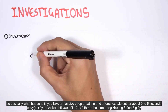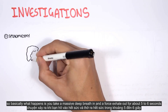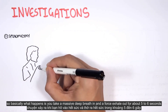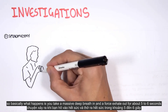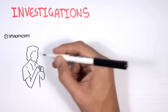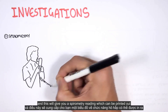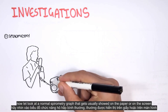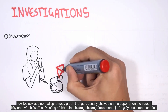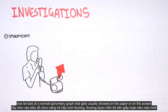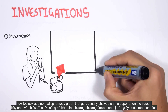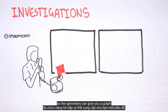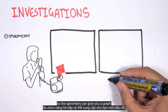Basically what happens is you take a massive deep breath in and a forced exhale out for about five or six seconds, and this will give you a spirometry reading which can be printed out. Now let us look at a normal spirometry graph that gets usually shown on the paper or on the screen.